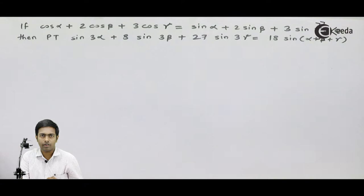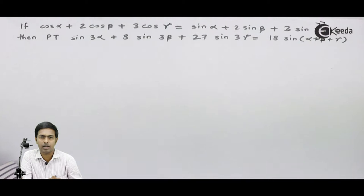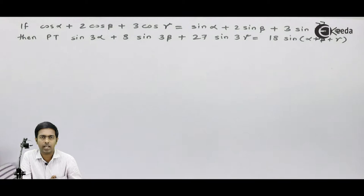Here two results are already given. The first one is cos alpha plus 2 cos beta plus 3 cos gamma is 0, and the other is sin alpha plus 2 sin beta plus 3 sin gamma is 0. If you observe, the coefficient of cos gamma and sin gamma is the same, that is 3. Similarly, the coefficient of cos beta and sin beta is the same, and the coefficient of cos alpha and sin alpha is the same. So in such type of problems, we always consider a complex number where we take all cos terms in the real part and all sin terms in the imaginary part. Let us proceed like that.